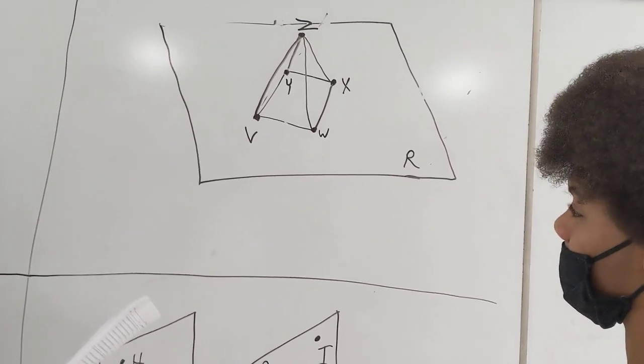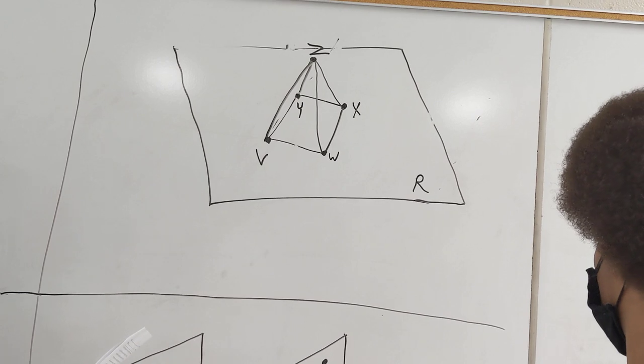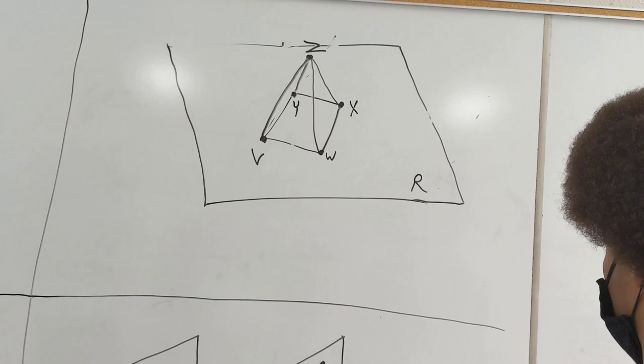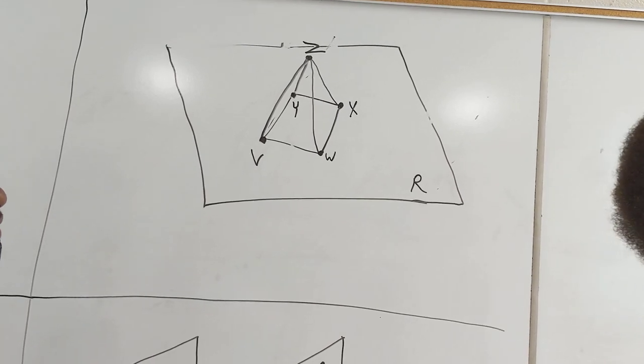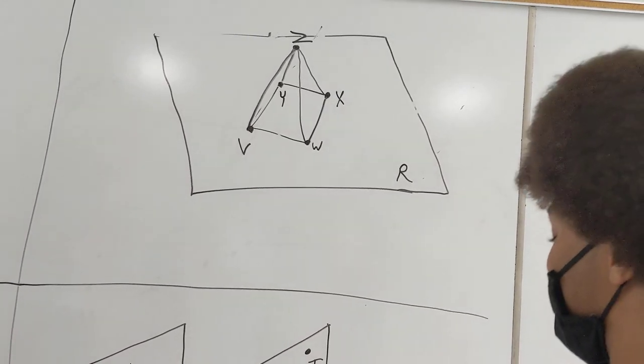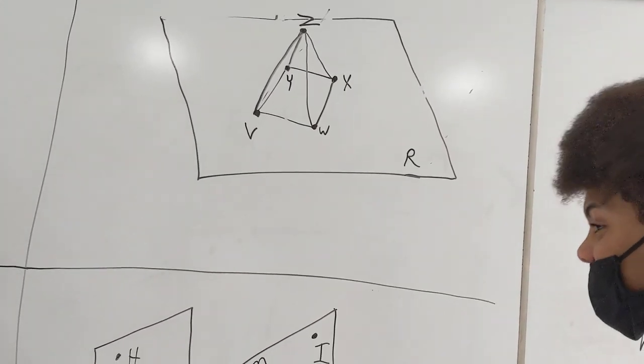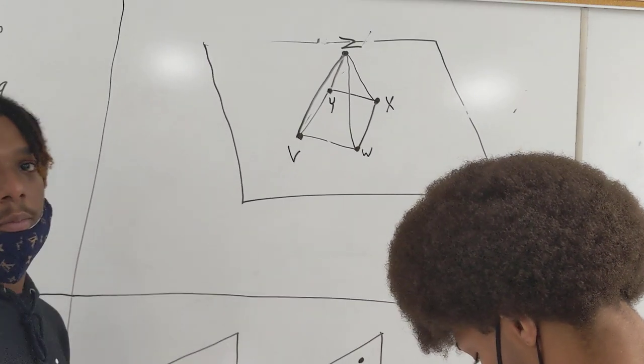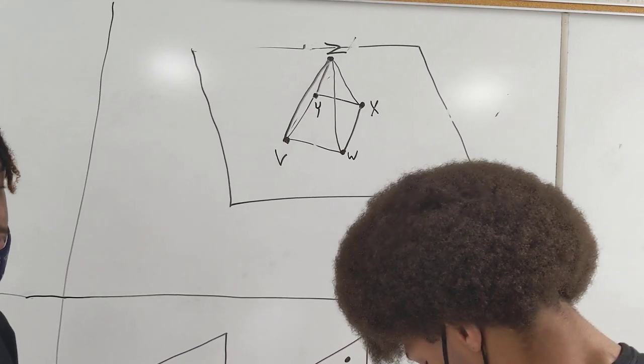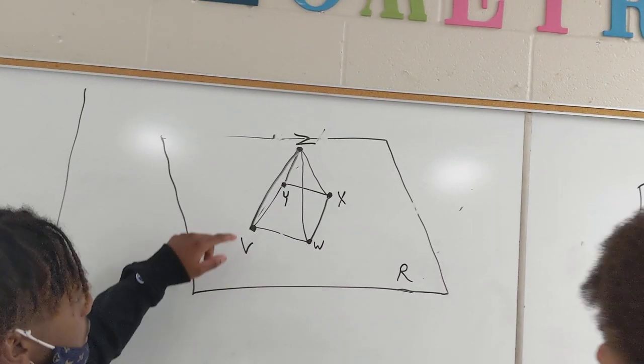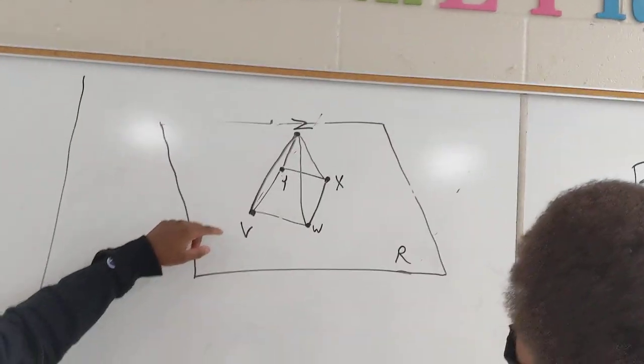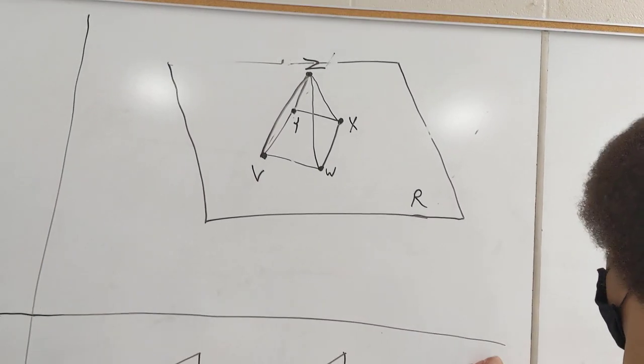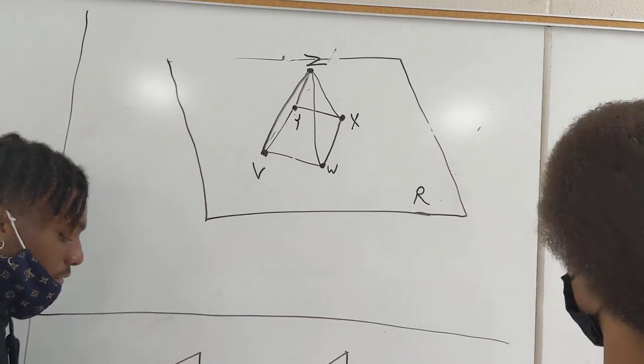What about the intersection of plane R and plane Z, V, Y? Exactly. Any time two planes intersect, they form a line. Can you run your finger along that line there? And remember that planes go in all directions, and they never stop, so that becomes a line. So two planes that intersect form a line. Very good.